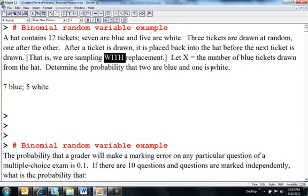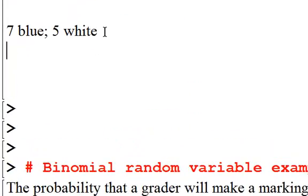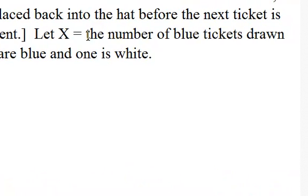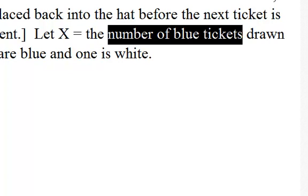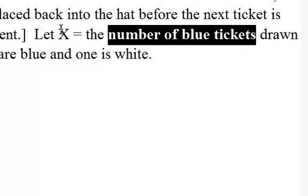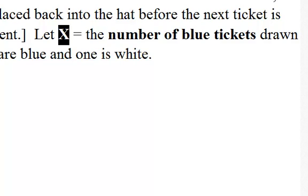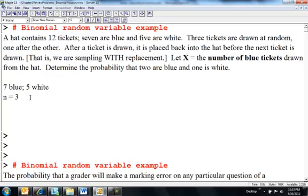I'm going to draw 3 tickets. So that is what n is, 3. That's my sample size. And a success is the number of blue tickets. You can label x whatever you want to be, but in this case I'm letting x be the number of blue tickets. And so then my probability of success for a binomial, I need a number of trials, which is n. Probability of success is the number of blue tickets. Probability of getting a blue ticket is 7 out of 12.